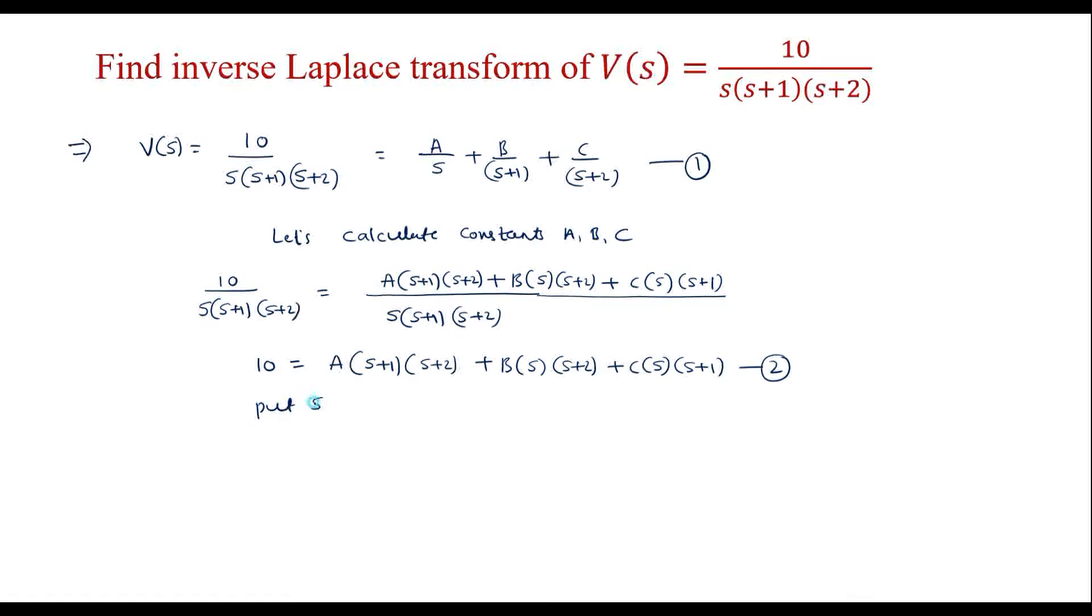Put s equals 0 in equation 2. Simplifying this, I will get 10 equals A(1)(2) plus B(0) plus C(0). So solving this, we will get A equals 10/2, which equals 5.